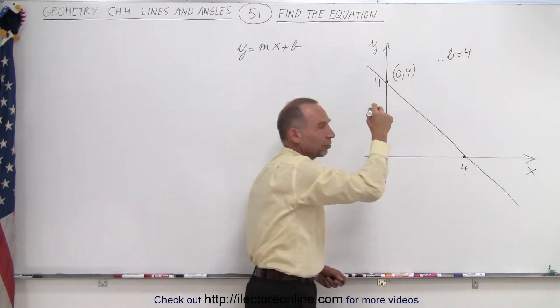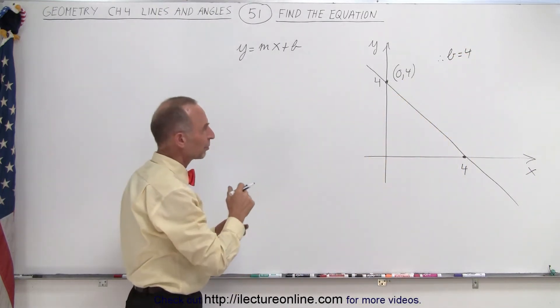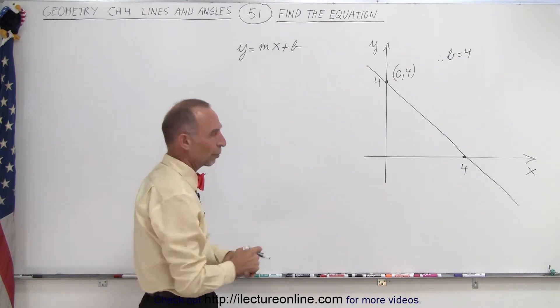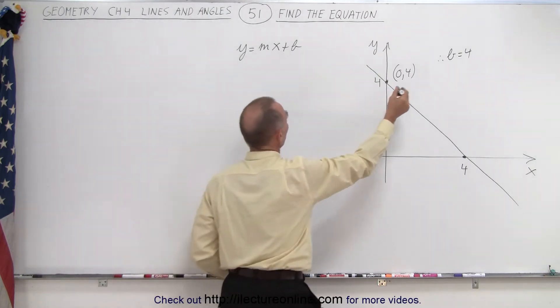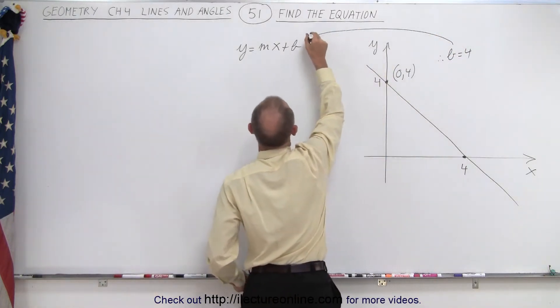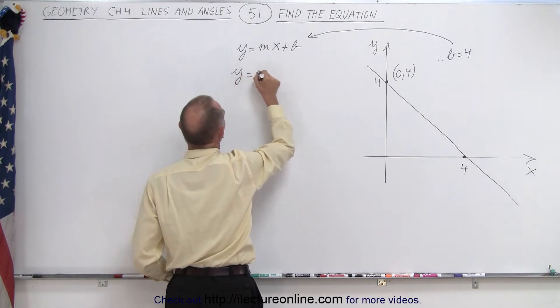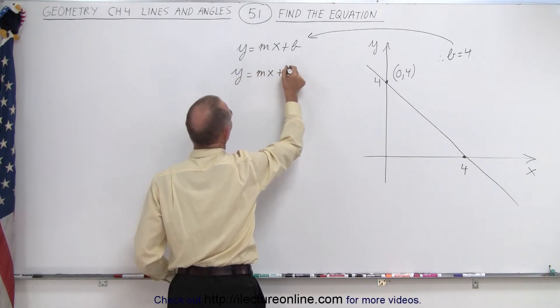These little dots right there, that little triangle shape made from dots, that means therefore b equals 4. We draw the conclusion. And so we can then plug that into our equation. Now our equation becomes y equals mx plus 4.